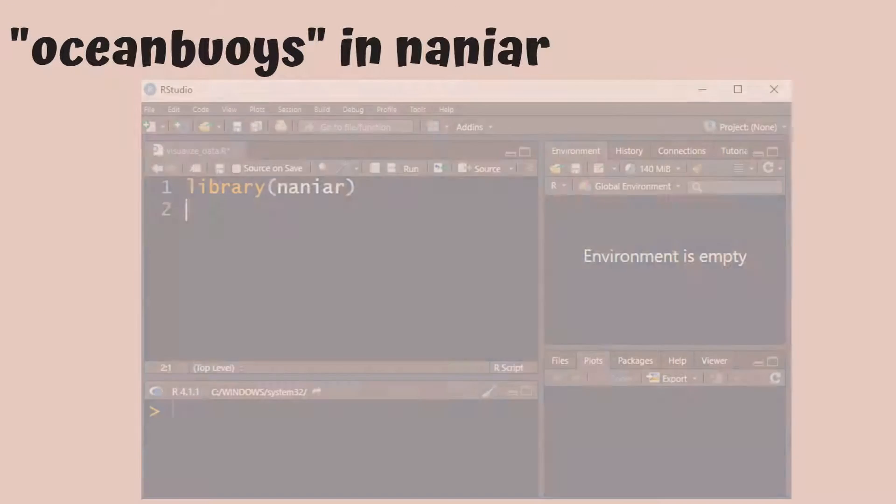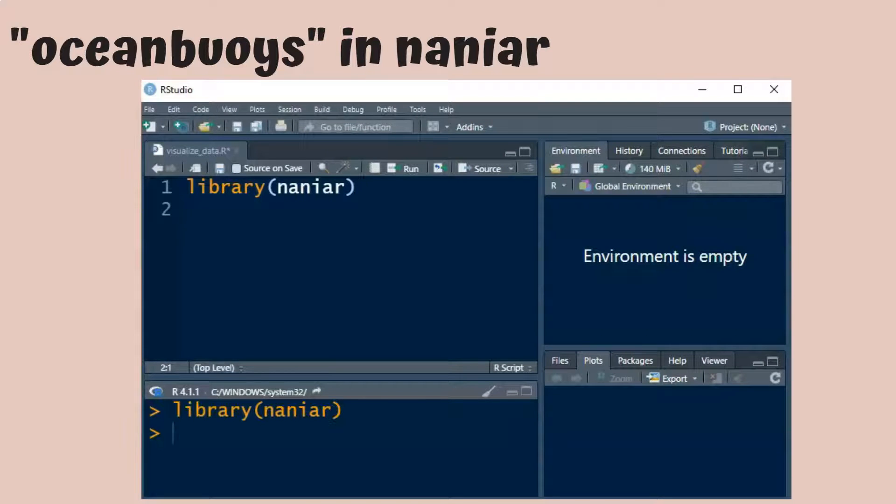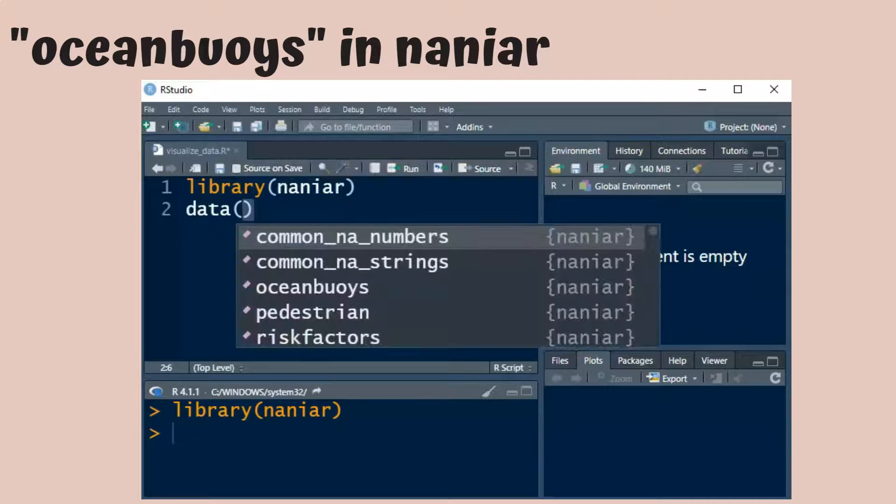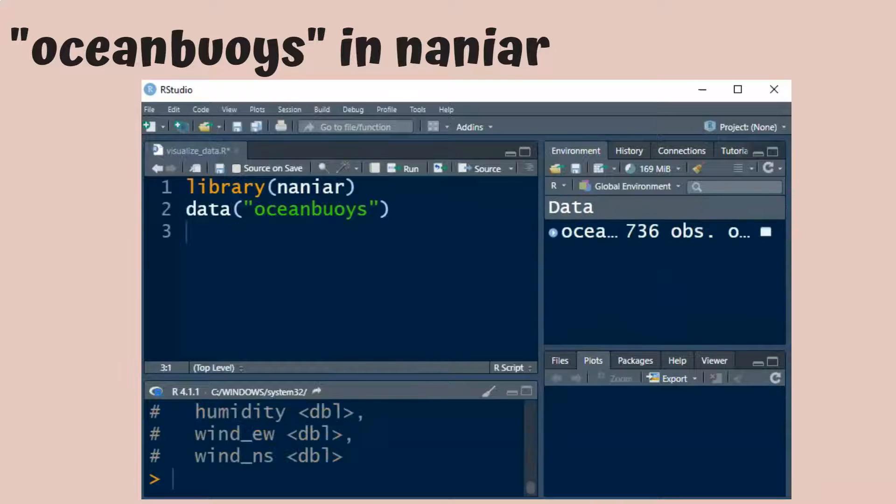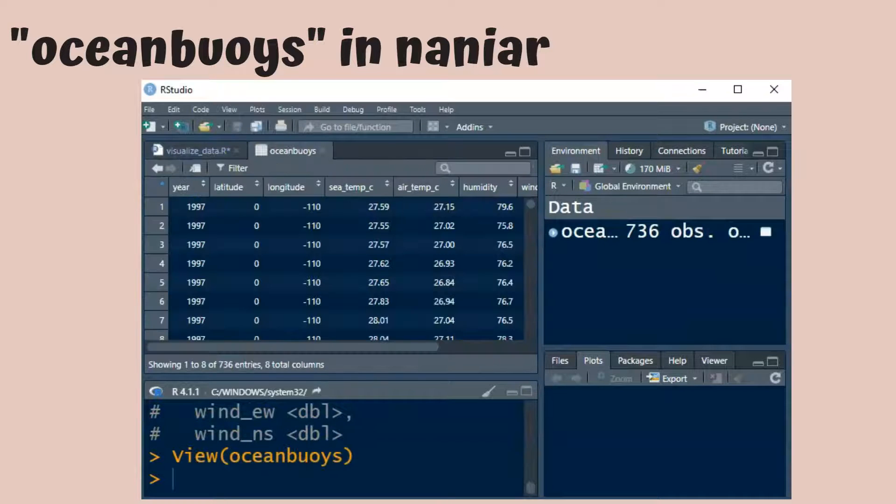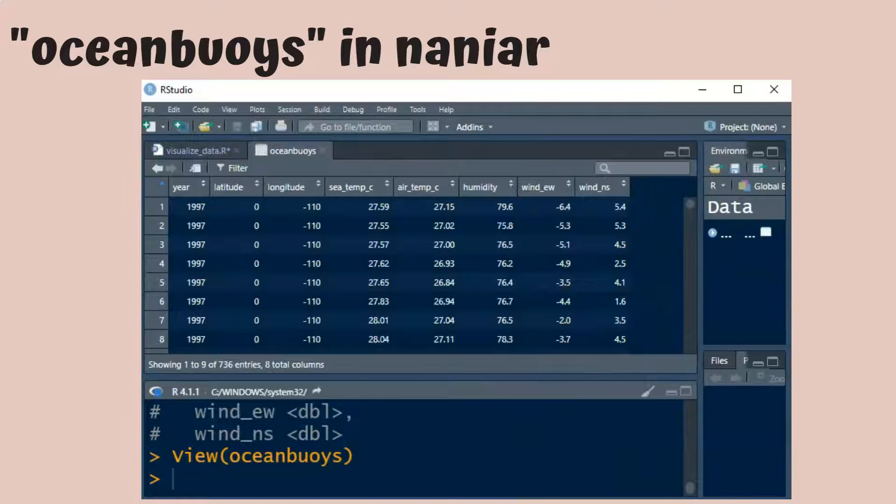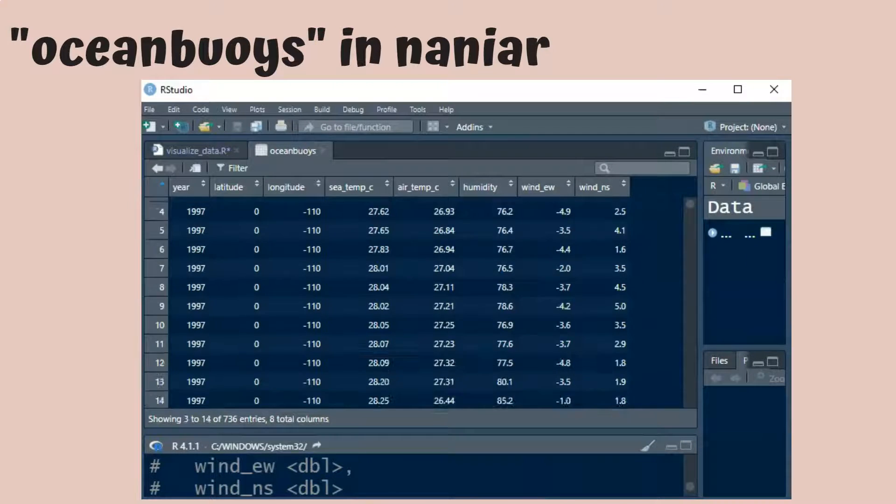We will also be looking at the ocean buoys data set, which is available in the Narniar package. If you load the library and write data ocean buoys, you'll be able to see this data set, which was collected by the Tropical Atmosphere Ocean Project.